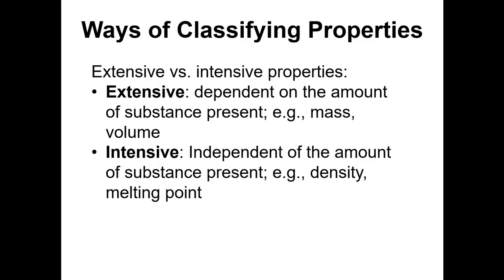Intensive properties are ones that are independent of the amount of substance — there's a little mnemonic: I-N, intensive is independent. For example, the density of a substance is an intensive property, and the melting point of a substance is an intensive property. In general, chemical properties are intensive — they are intrinsic to the substance itself, not depending on how much of it you've got.